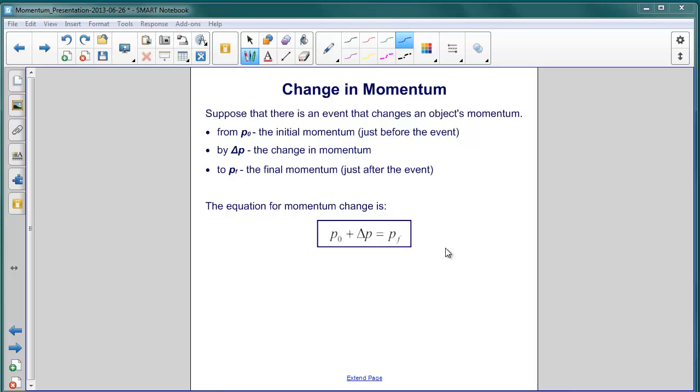Let's first look at change in momentum. Suppose that there's an event that changes the momentum of an object. In the beginning, the object is moving with a momentum, which we'll call P sub zero, or P naught.